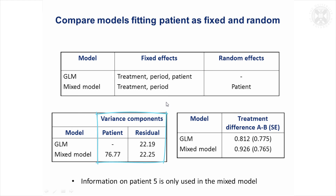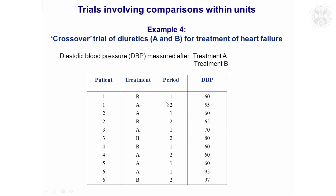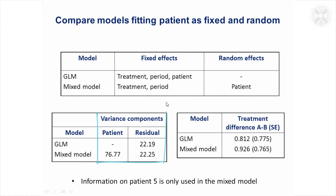The variance components for the residual — that's the variation within the patients — is very similar between the two models. There's a lot of variability between the individual patients, not surprisingly. Some patients, such as patient six, tend to have a much higher blood pressure overall, so we have a large variance component there.